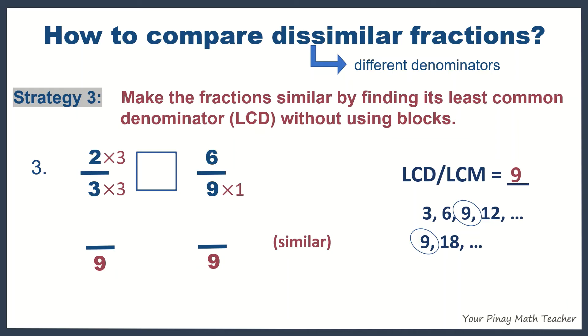Oh, you multiply by 1. So, with the numerator, or simply copy the numerator 6. So, 2 times 3, we have 6. 6 times 1, we have 6. Since 6 is equal to 6,